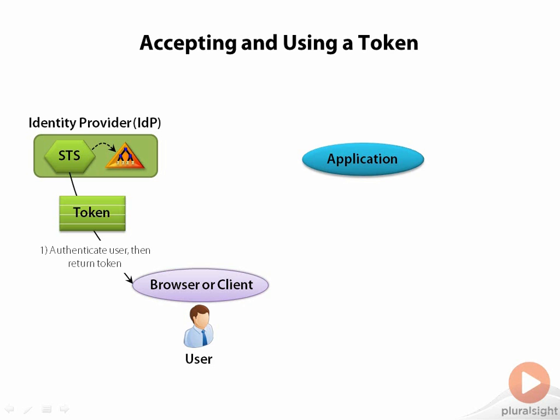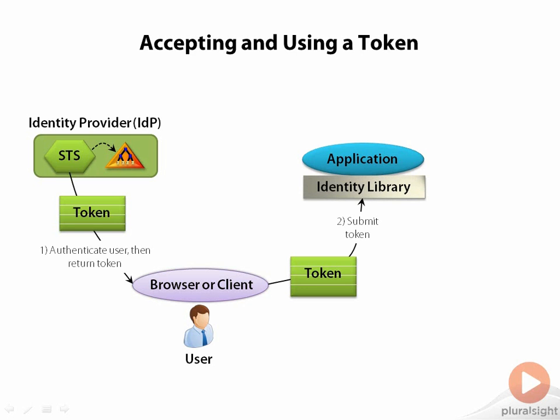The user now has a token that he can send to an application he'd like to access. The application needs to process that token. This means the app developer potentially has to write the code to do this. But since all sorts of applications will need to do this, it actually makes sense to provide a common identity library that does this on behalf of the application — otherwise it's just too difficult to write the code.